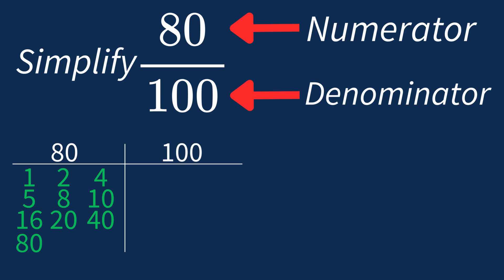For 100, the factors are 1, 2, 4, 5, 10, 20, 25, 50, and 100. So the largest common factor between 80 and 100 is 20.